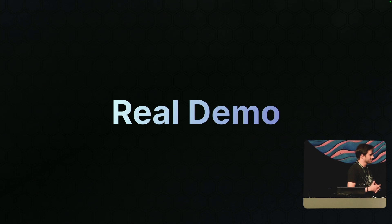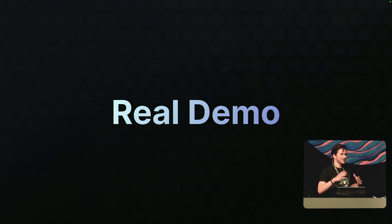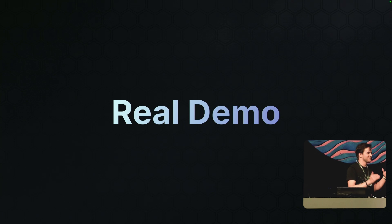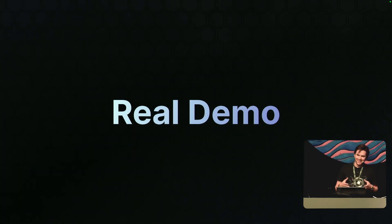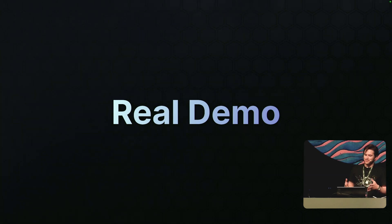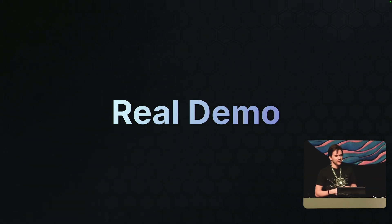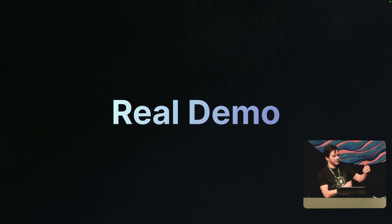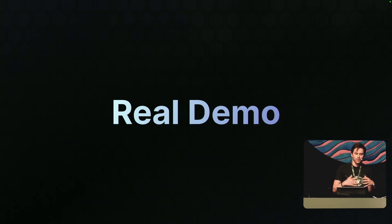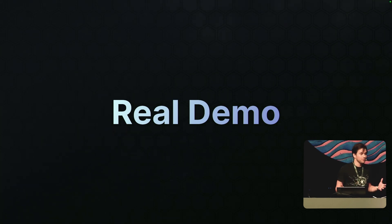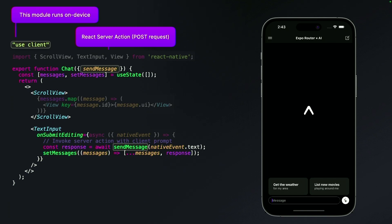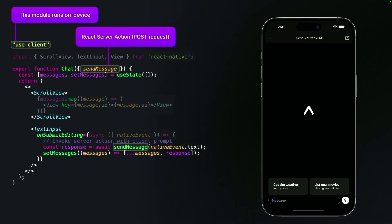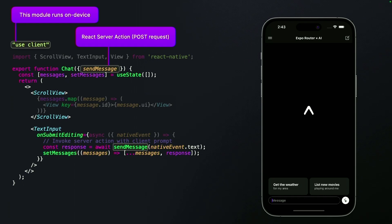There's a lot to RSC, such as server actions, concurrent routing, flight payloads, etc., but I figure it would be easier to just show you a demo of what's possible. I've been really interested in AI apps lately, but it's historically been pretty hard to build high-powered AI native apps, because streaming and server rendering are both critical aspects of working with an LLM. With React server components in Expo Router, it's actually really easy to work with AI. Here I have a ChatGPT-like app which pings OpenAI via React server action and streams down native text from the server.